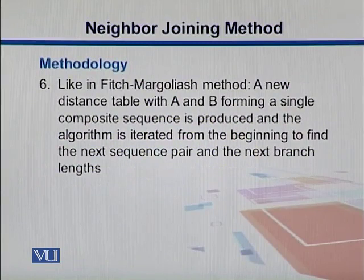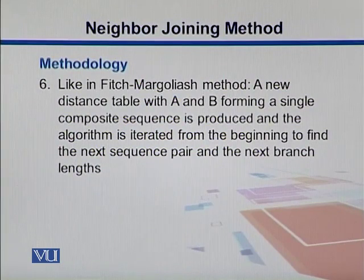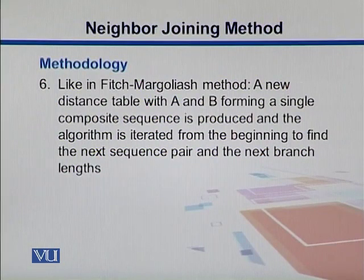We take A and B and combine them. We make a composite sequence, then iterate until we find the next pair and keep on adding. It's like Fitch-Margoliash methods. We go iteratively until we come up with the overall tree.